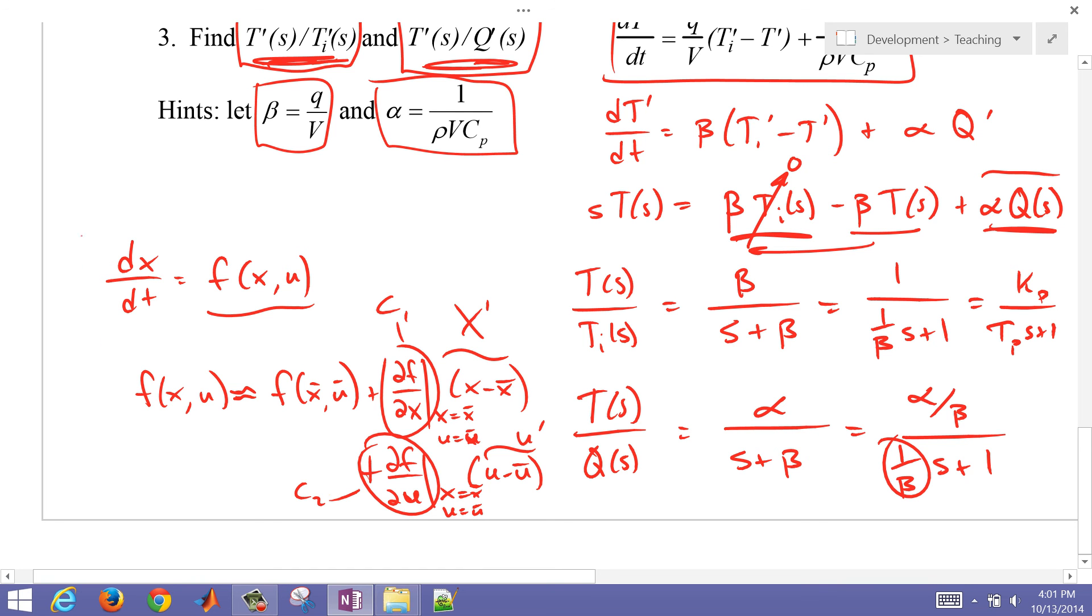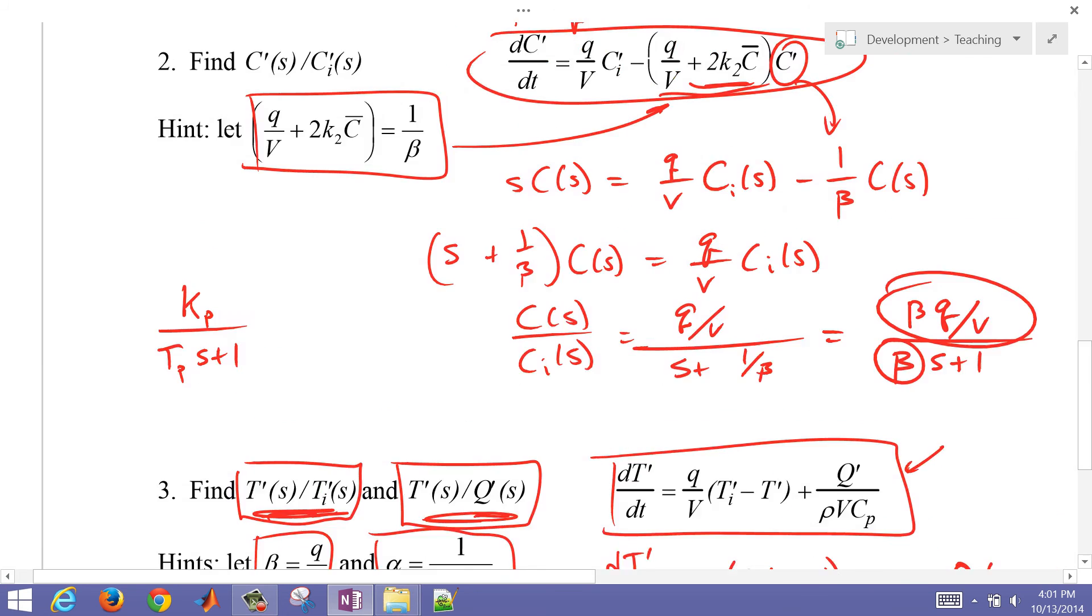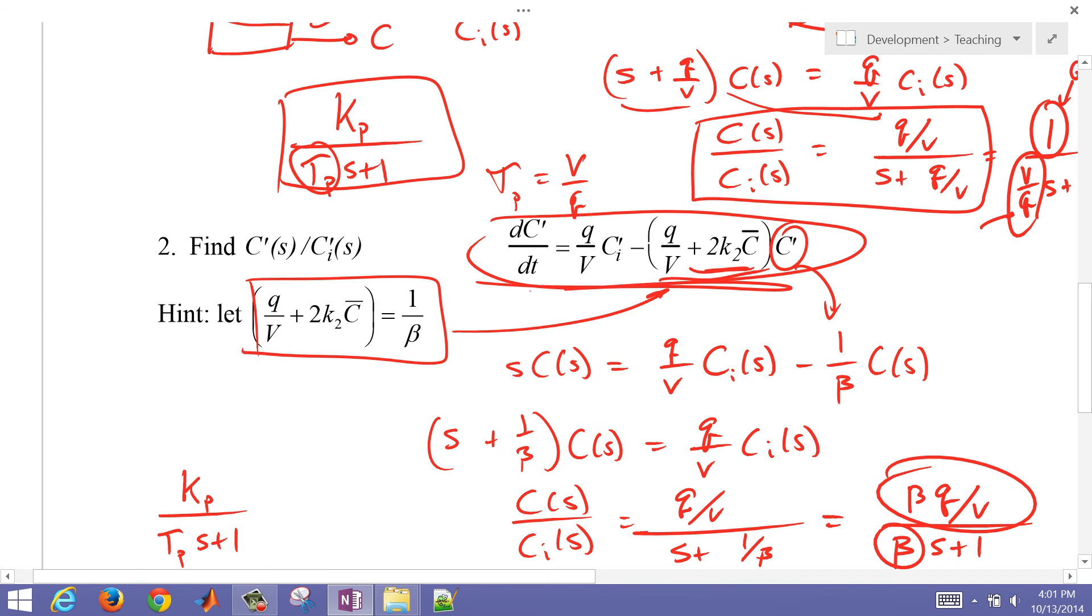And that becomes X prime, and that becomes U prime, and this becomes a constant, and that becomes another constant out front. So this is the process of getting it into these deviation variable forms like I showed, and then this takes it down to the point that you can get transfer functions.